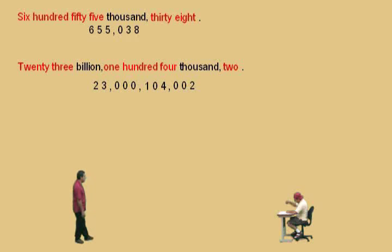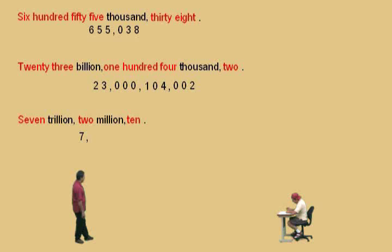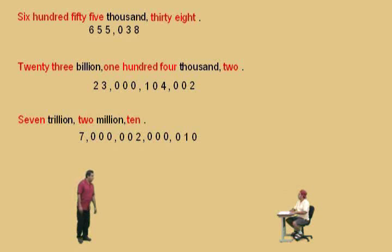How about this one, Charlie? Seven trillion, two million, ten. So: 7,000 — there are no billions — 000 — two million: 002 — no thousands: 000 — and ten: 010. There you have it.